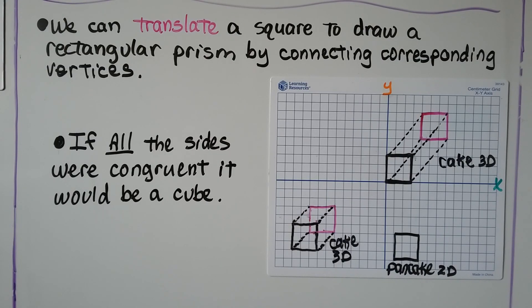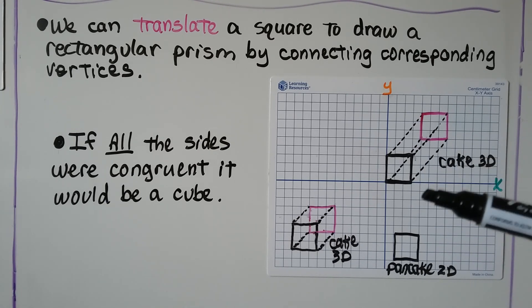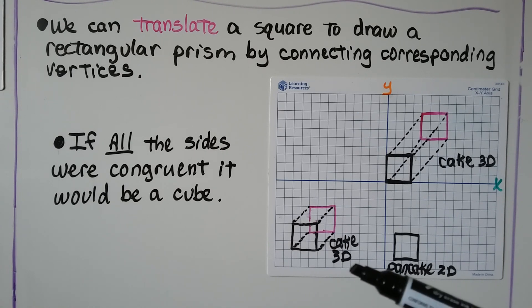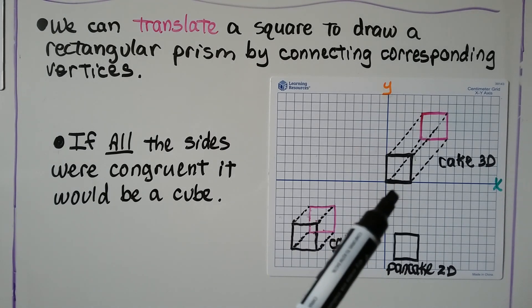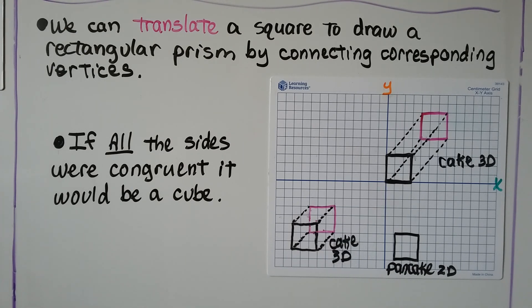We can translate a square to draw a rectangular prism by connecting the corresponding vertices, and if all the sides were congruent, it would make a cube. So we went from a 2D square right here for our pancake to a 3D rectangular prism for our cake, or if they're all congruent sides, we have a 3D cake cube.